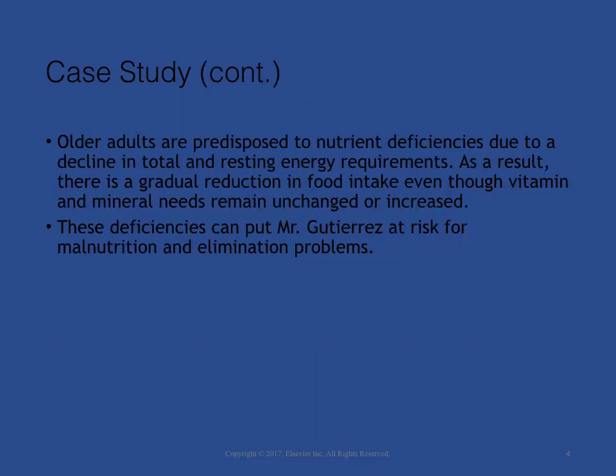Older adults are predisposed to nutrient deficiencies due to a decline in total and resting energy requirements. As a result, there is a gradual reduction in food intake even though vitamin and mineral needs remain unchanged or increased. These deficiencies can put Mr. Gutierrez at risk for malnutrition and elimination problems.